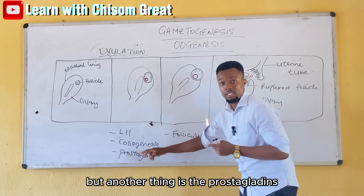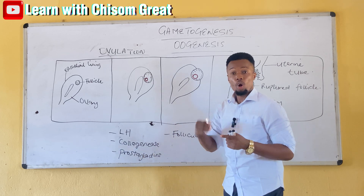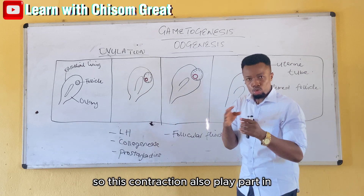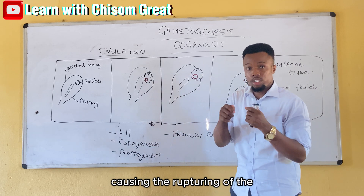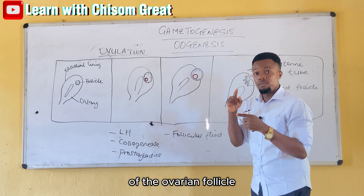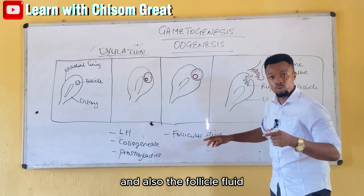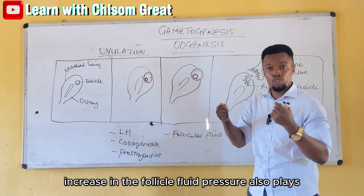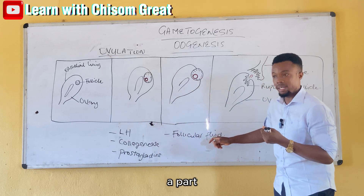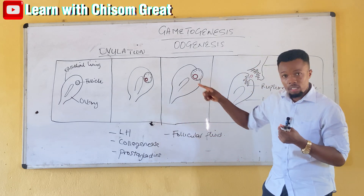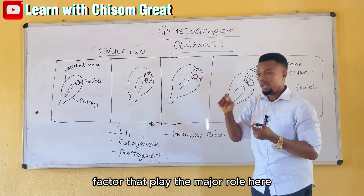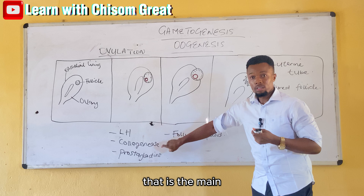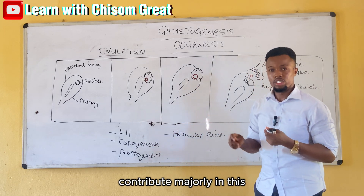Another factor is prostaglandins, which cause contraction of smooth muscles around the ovary — this contraction also plays a part in the rupture of the ovarian follicle. Increased follicular fluid pressure also plays a part. However, the main factor is the digestion by collagenase.